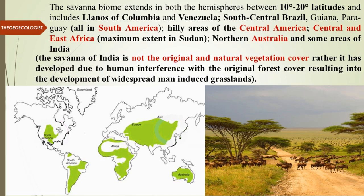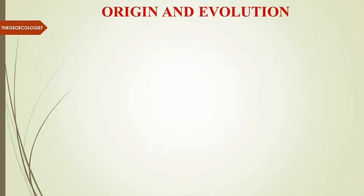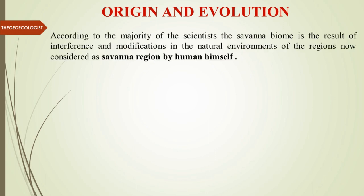The Savannah of India is considered not original. Why? Because the natural vegetation cover has been removed by human interference and then it developed. So naturally it was not there — this grassland biome was not available naturally. Due to clearing of original forest cover, it resulted in the development of widespread human-induced grasslands in the Indian context.